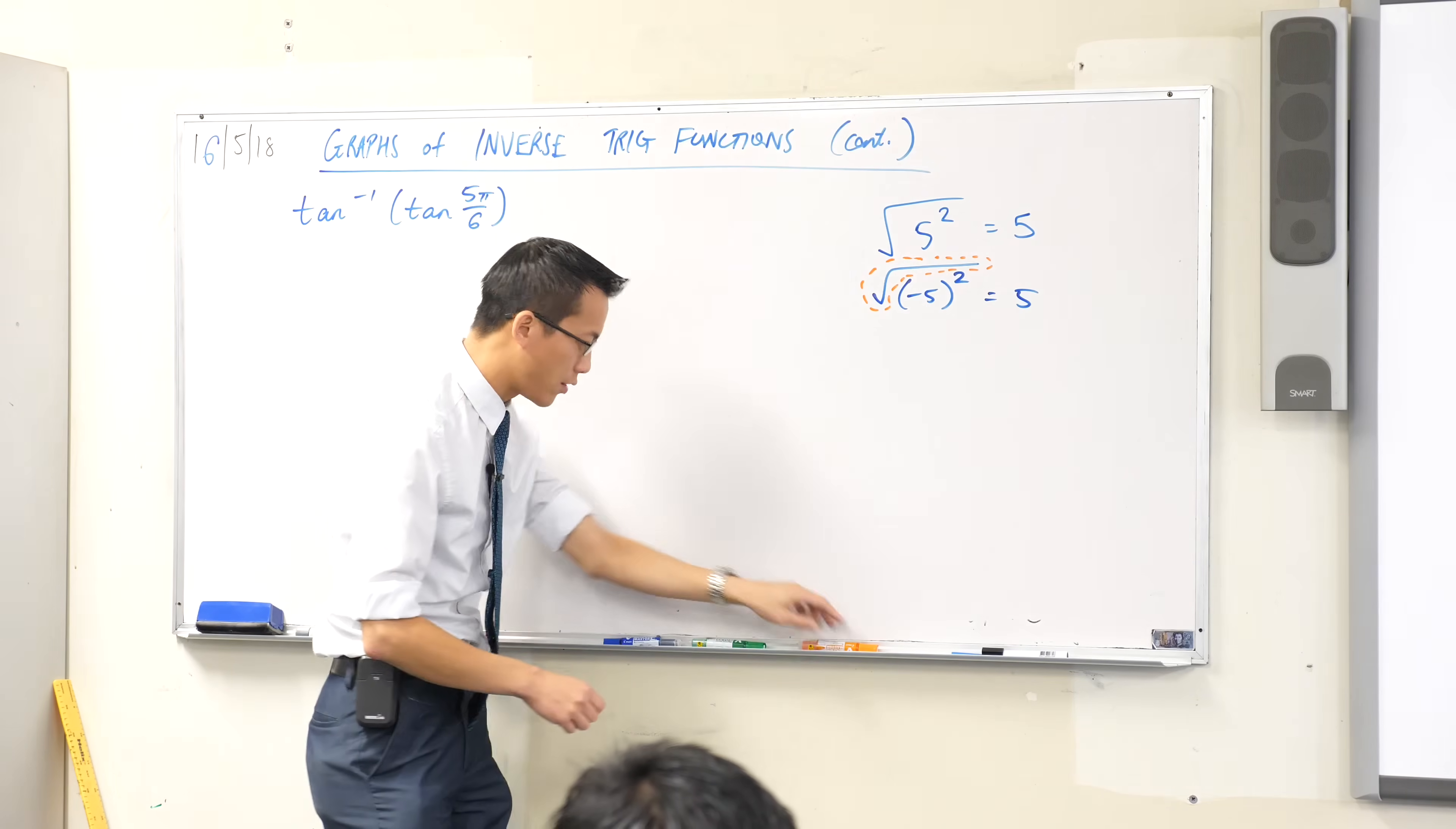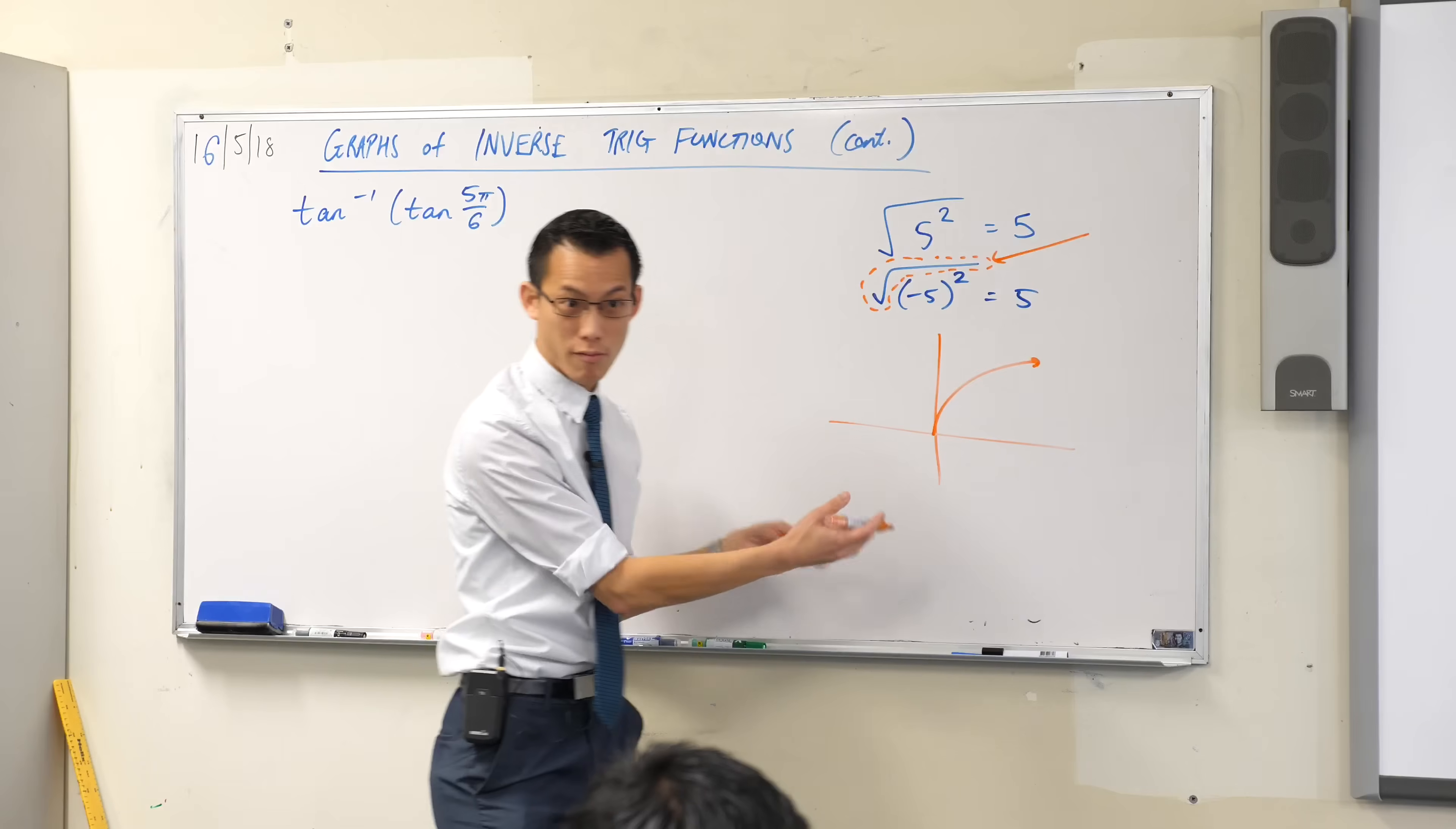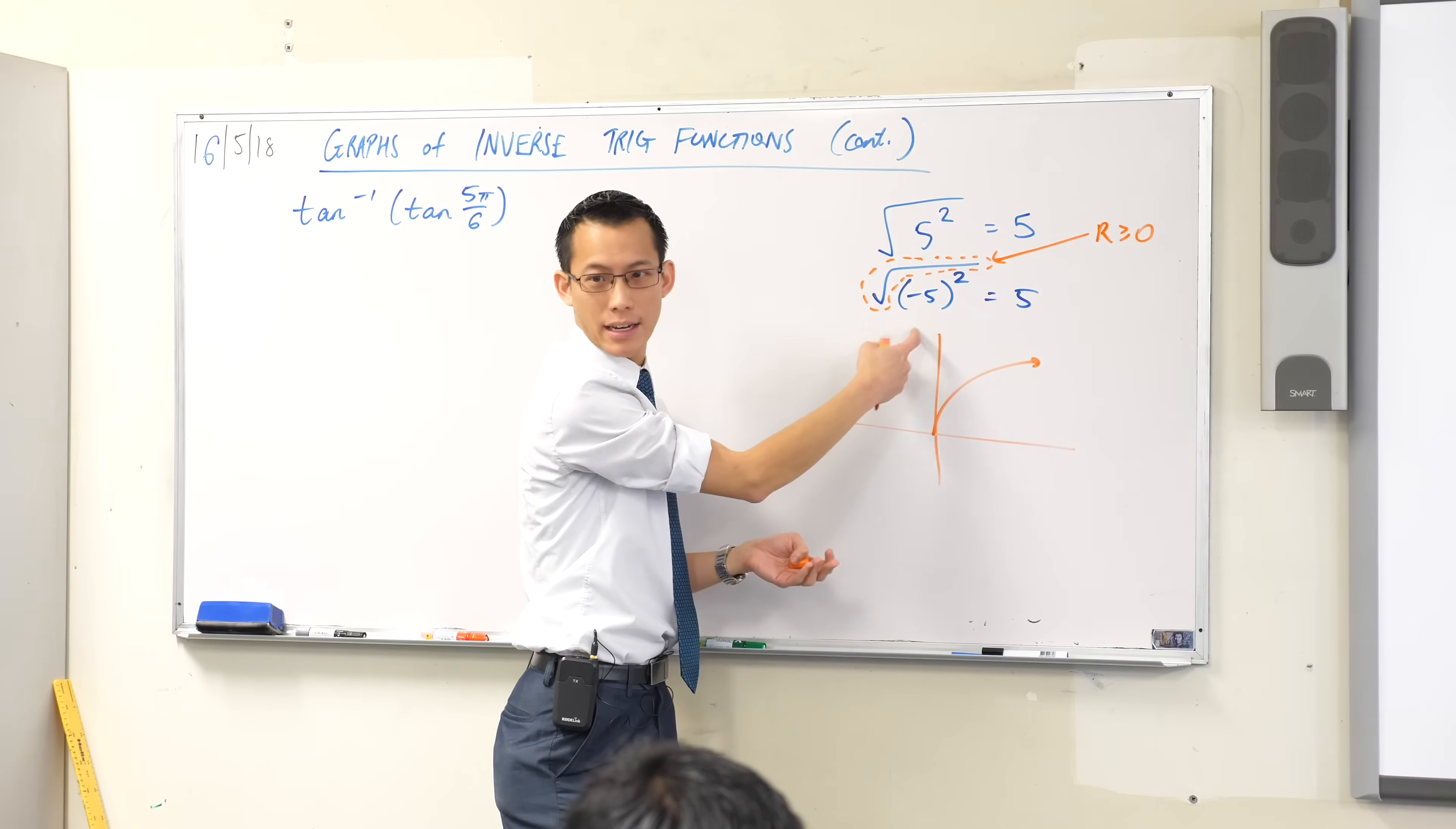Now more specifically, the issue is that this guy here, we restrict it. It only has a particular range. What is the range of the square root function? You can think about what it looks like. There it is. The range is, it's going to be greater than or equal to zero. So the range here is greater than or equal to zero, which is why it will never output a value like negative five.